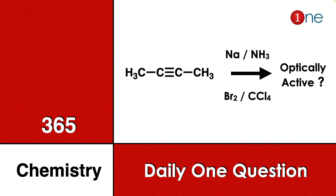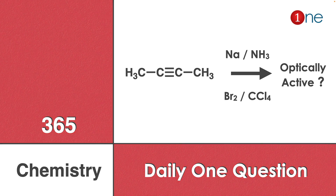Welcome to One Chemistry, this is the 365 Chemistry Series — daily one question for you. 2-butyne is given; you are reacting it with sodium and liquid ammonia in the first step, and in the second step you are reacting with bromine and carbon tetrachloride. You have to find the final product.